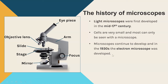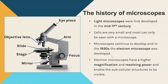Microscopes continued to develop and it was in the 1930s that the electron microscope was developed. The electron microscope has a much higher magnification and resolving power compared to the light microscope. What that meant for the use of microscopes is we were now able not just to see the cells but to see the inside of cells — we call those the subcellular structures.